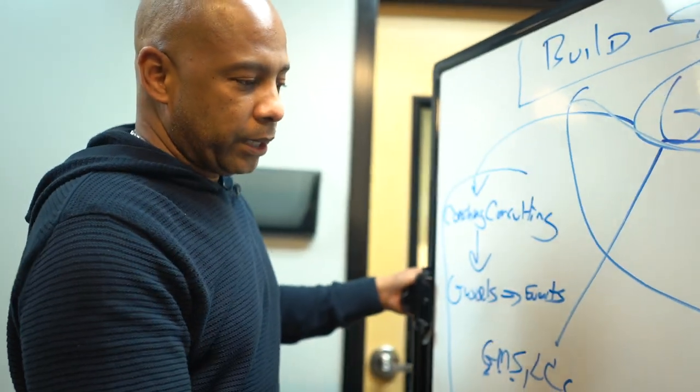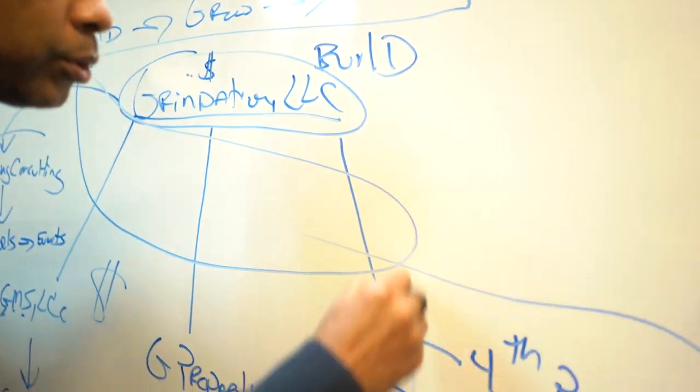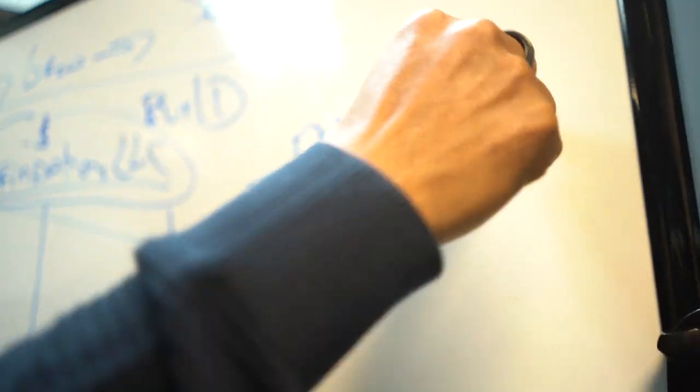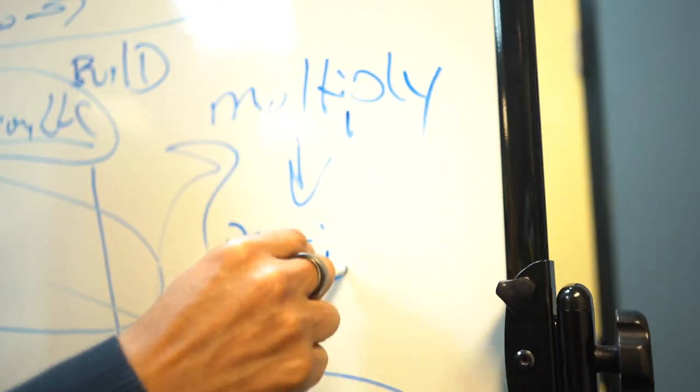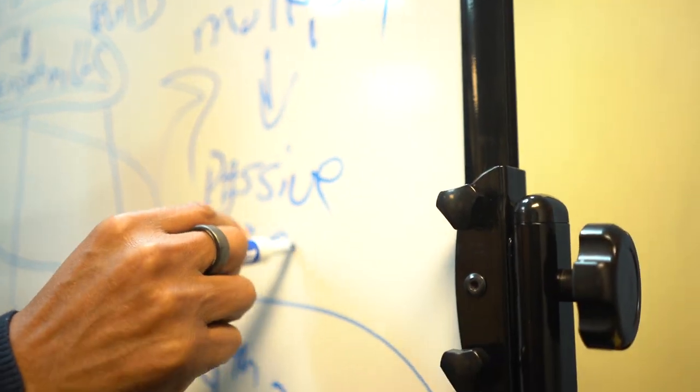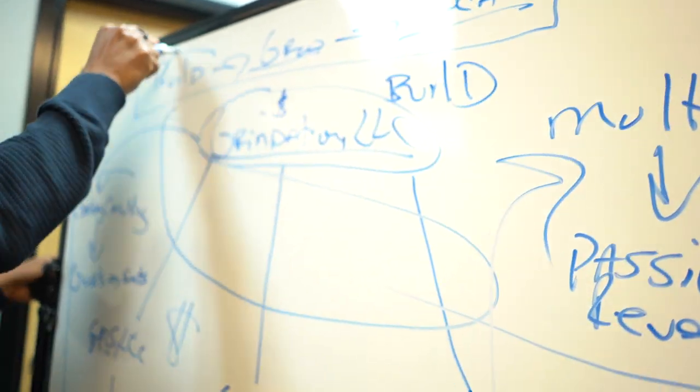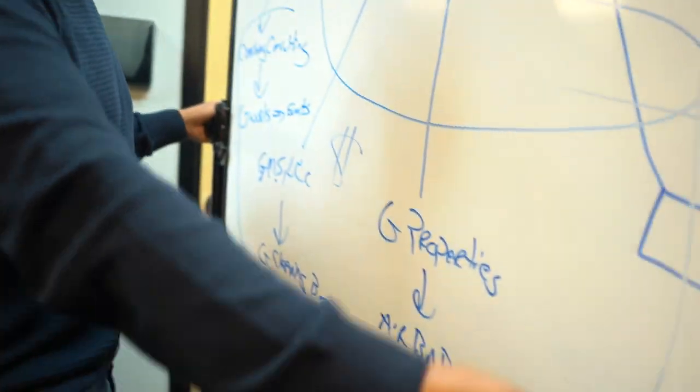All of the money, the revenue that I generate from all of these, it goes into my multiply, meaning creating passive revenue. Before you can grow, before you can scale, you must build. This was the build, the grow, and the scale.